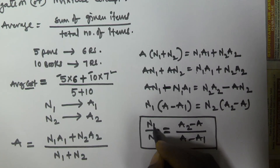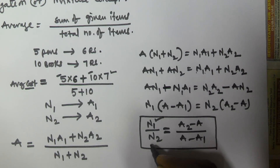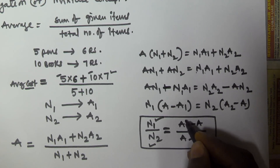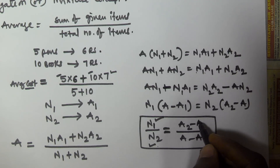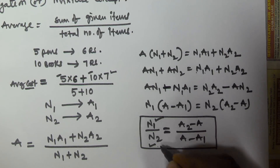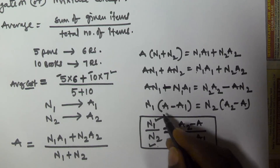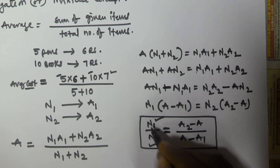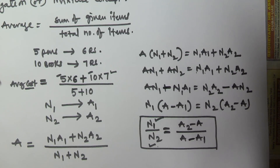Here, N1 is the number of items of type 1 and N2 is the number of items of type 2. A2 gives the average cost or weight of N2 items, A1 gives the average weight or cost of N1 items, and A is the overall average weight or cost of both items together.